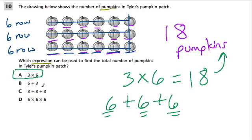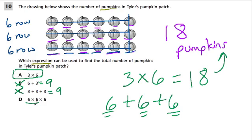If you're not sure about the other ones, I would solve them to figure out if they make sense. 6 plus 3 is 9 — that's not enough pumpkins. 3 plus 3 plus 3 is just 9 pumpkins — 3 groups of 3, not enough. 6 times 6 times 6 is a really big number — 6 times 6 is 36, and it's already more pumpkins than we have. So I know that one can't be the answer. So again, I would stick with A.